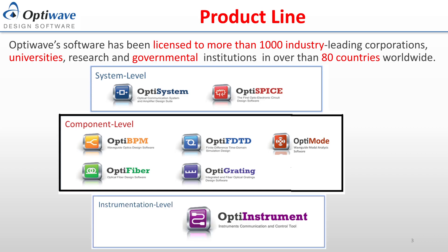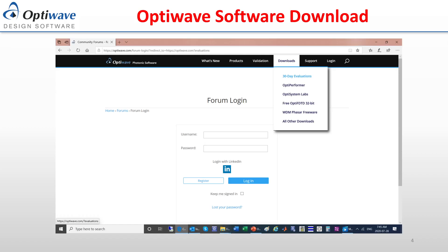OptiInstruments is OptiWave's instrument-level software package. It is used to communicate with and control different kinds of instruments, allowing users to remotely communicate with instruments, automate testing, and receive signals for post-processing. If you or your colleagues would like to try an OptiWave product, free 30-day evaluations are available. You can visit OptiWave's website and select the 30-day evaluation link under the downloads header.